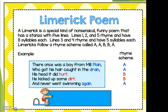Let's look at our example. There once was a boy from Millplain who got his hair caught in the drain. His head it did hurt. He kicked up some dirt and never went swimming again. So let's look at some of this vocabulary. This whole thing here that looks like a paragraph is what we call a stanza. Then each one of these in poetry is what we call a line. There are five lines in a limerick. If we're writing a limerick and a line gets too long, we always have to have five lines.